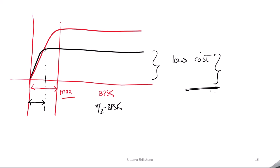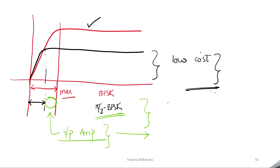But if we have the luxury of using a more linear power amplifier, the advantage is that there is room left to further increase the input power or input amplitude. If we increase the input amplitude, we can transmit the signal to a longer distance. So π/2-BPSK actually enhances the cell coverage area by giving the opportunity to increase the transmit power without saturating the power amplifier.